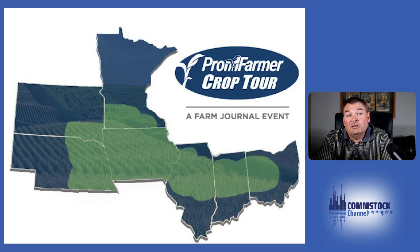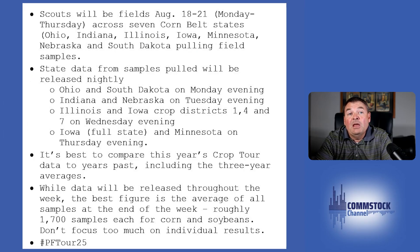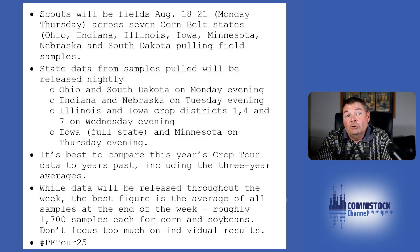There will be nightly meetings throughout the week to release tour results from each stop. Here's the nightly schedule: Monday evening will be the results from Ohio and South Dakota. On Tuesday, it will be Indiana and Nebraska. On Wednesday, it will be Illinois and the western crop districts in Iowa — crop districts one, four, and seven — which run along the western edge of the state. The eastern half of Iowa and southeast Minnesota will be released on the final day, Thursday.